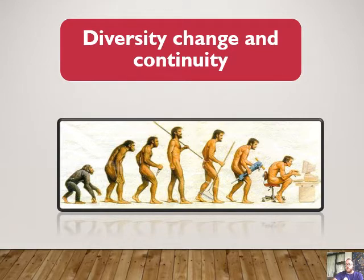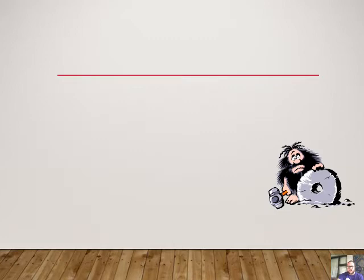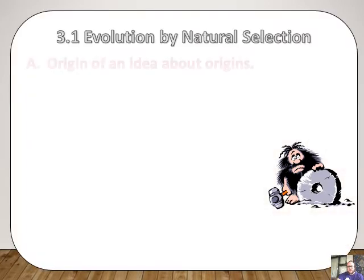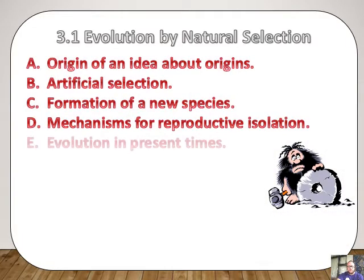This evolution, obviously, I need to teach you the basics. As you can see from the diagram, it's how humans have really sort of gone backwards. We're first going to start with Evolution and Natural Selection — the origin of an idea about origins. We're going to look at artificial selection, formation of a new species, mechanisms for reproductive isolation, evolution in present times.